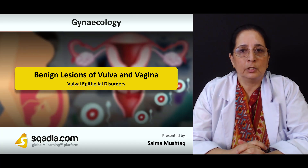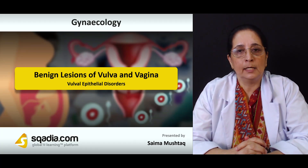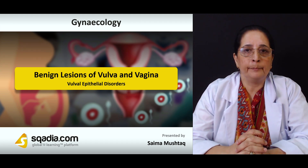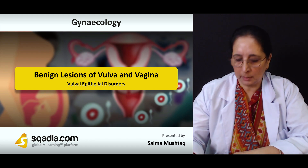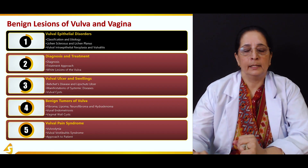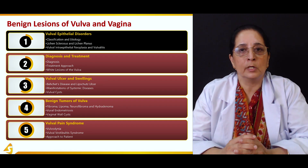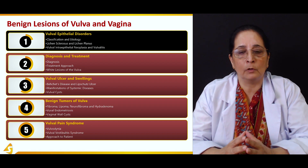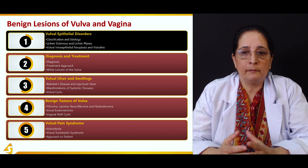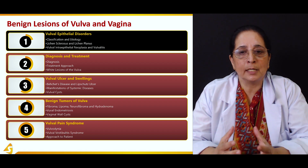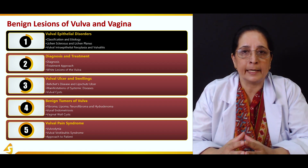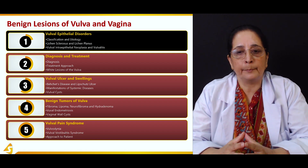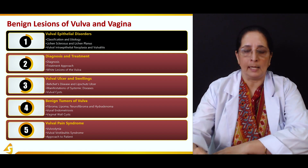In the first section of our lecture topic, benign lesions of vulva and vagina, we will talk about some epithelial disorders of the vulva. In this section, we will discuss the classification and etiology of vulva epithelial disorders, and also cover lichen planus, lichen sclerosis, vulval intraepithelial neoplasia, and vulvitis.